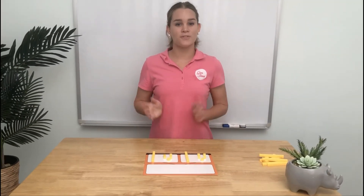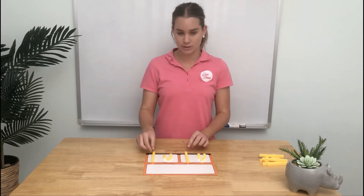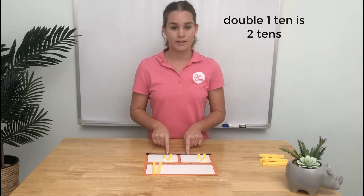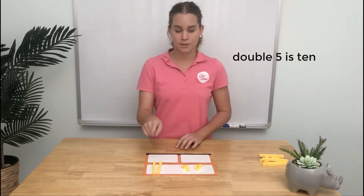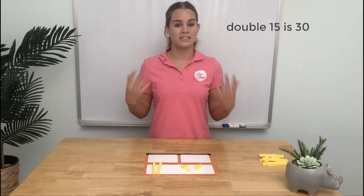Let's try another one. This time we're going to double 15. How would you double 15? Well, I would do the tens part first. We know double one ten is two tens, and we know double five is ten. So now we have two tens plus another ten, which is 30. Double 15 is 30.